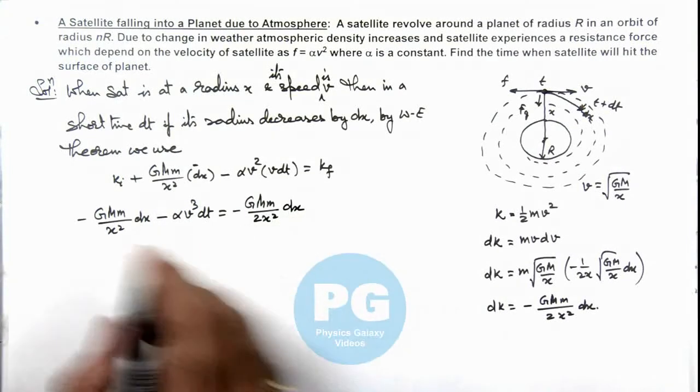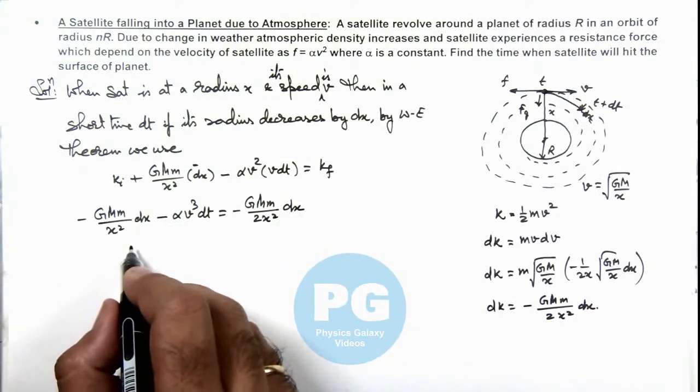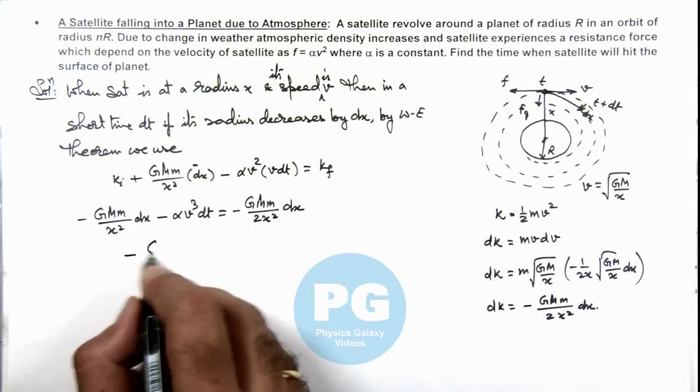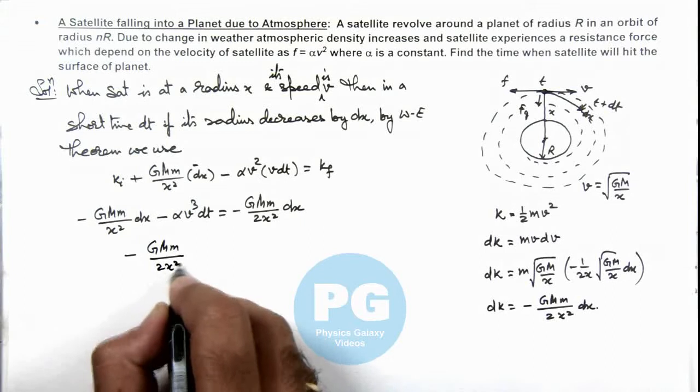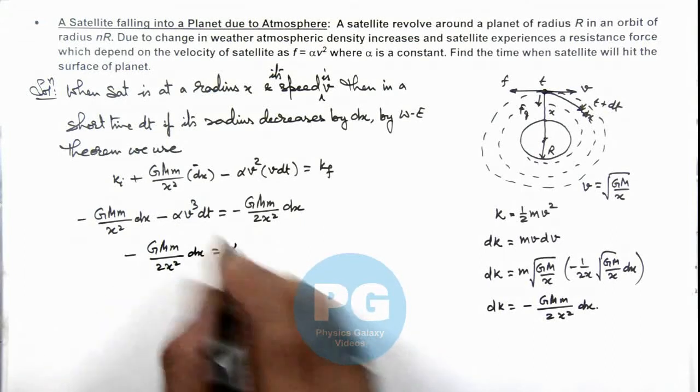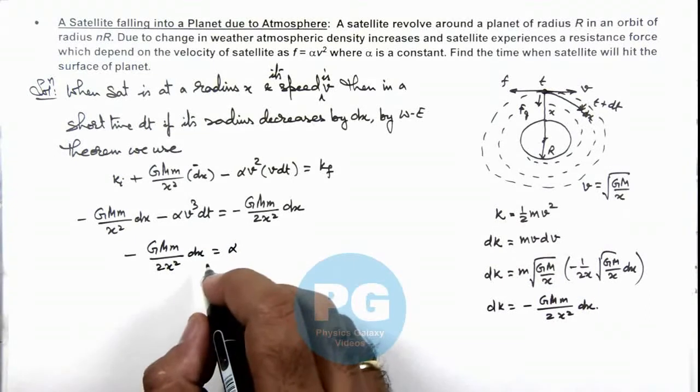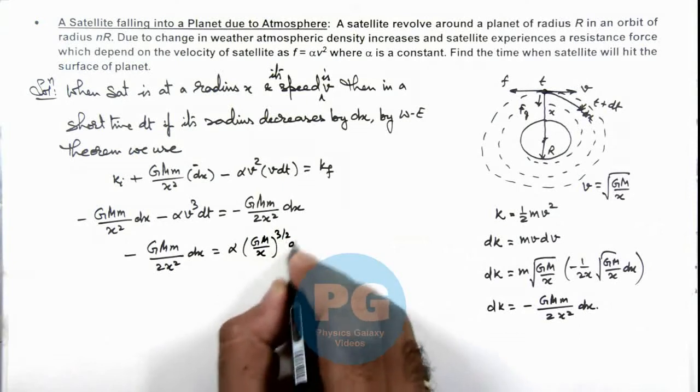Further rearranging the terms of dx and dt on the opposite sides of equality, here we are getting -GMm/(2x²) dx is equal to α v³. v we can take as GM/x, so this is GM/x^(3/2) dt.